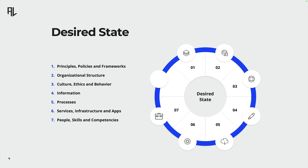Let's not forget about information — this is what you're protecting. A desired state ensures that all data, from customer details to trade secrets, is classified, handled, and stored securely and in compliance with regulations.